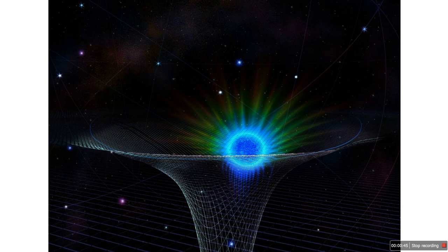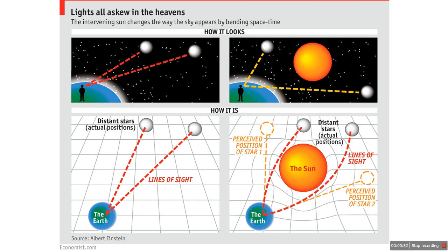Einstein came along and said what if gravity isn't a force at all? What if the universe is like a trampoline? Einstein's big idea was that space and time are like a giant, flexible fabric called space-time. Imagine a trampoline. If you place a heavy ball like the sun in the middle, it creates a dent or a curve in the trampoline.